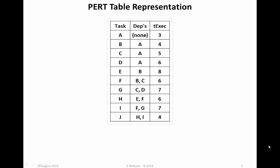Here is a typical PERT table representation of a project. Across the top, the column identifiers are the task identity, the tasks on which each task depends on, in other words the ones that have to be done previously, and the execution time of each task, tExec. The row identifiers down the left are the tasks of the project under the task column heading. In this case, there are ten tasks, A through J.